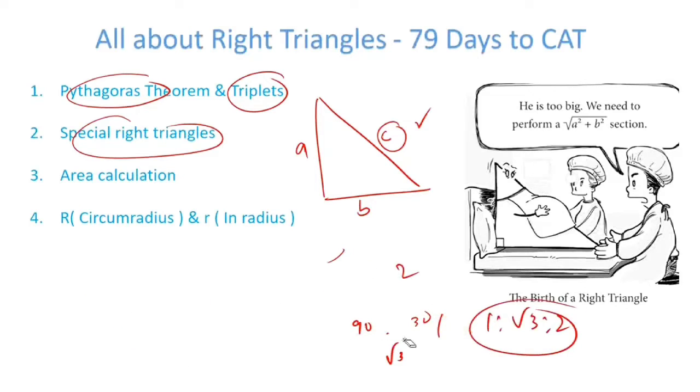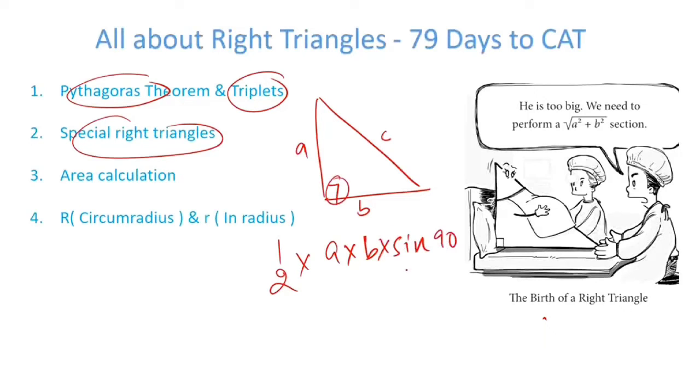Talking about the third aspect which is area calculation. One way obviously is calculating half base into height. Another way of calculating can be, since you have all three sides, you can use Heron's formula also. Product of two sides into sine of the included angle. In this case it becomes sine 90 which is 1. But if let's say an example like this, I have 30 here, this becomes half into A into C into sine 30 which is 1 by 2, so AC upon 4.